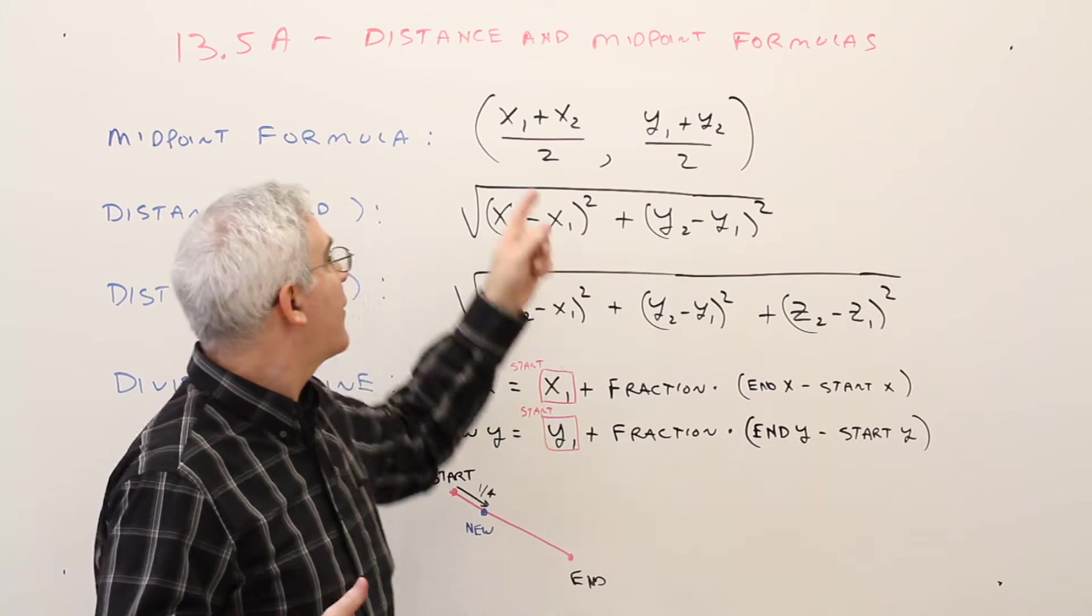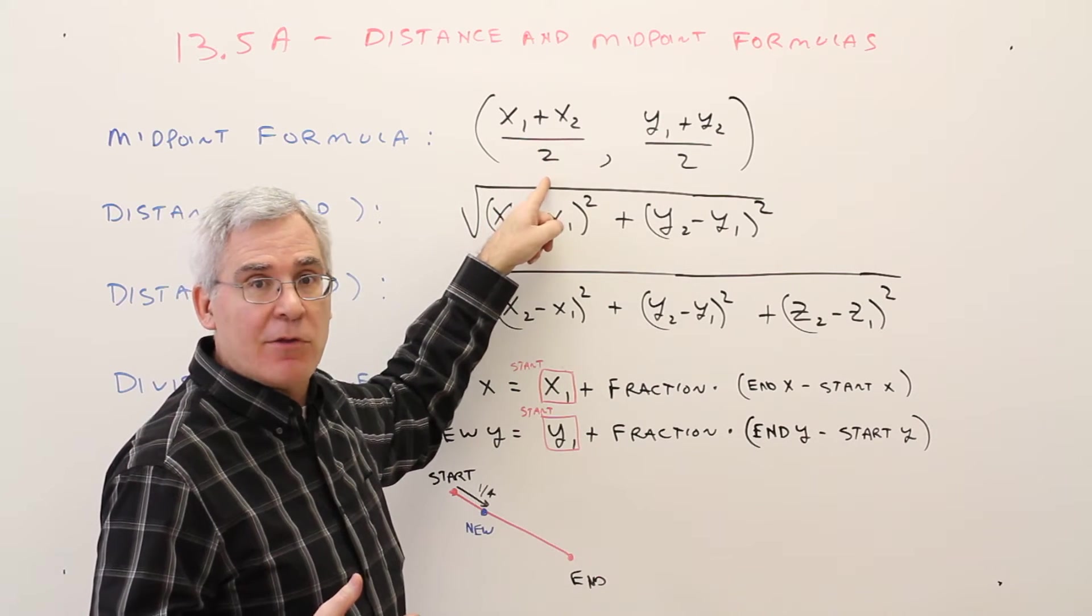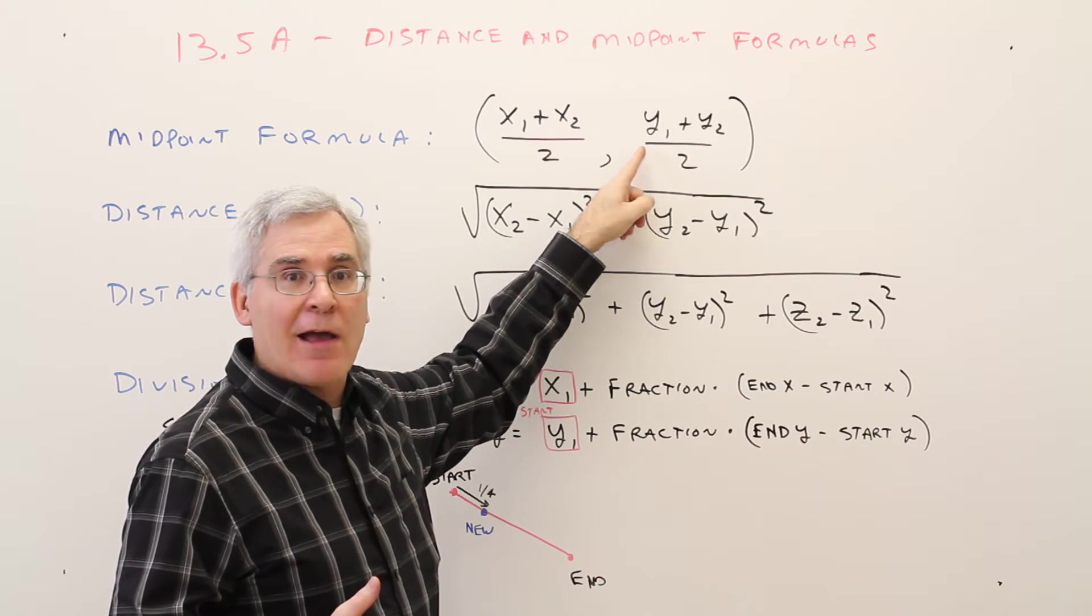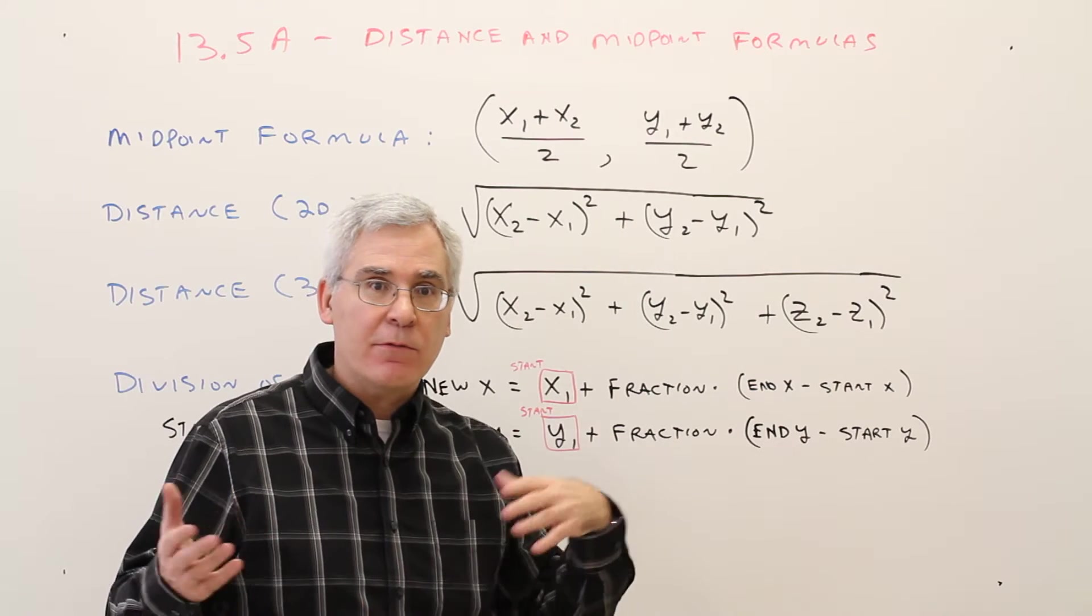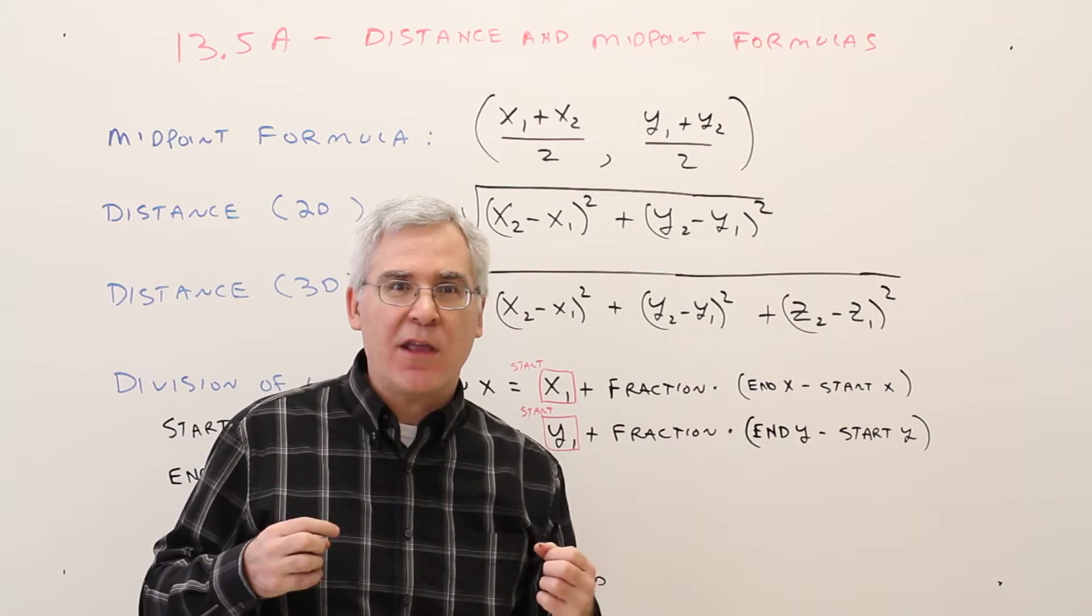And to find the average of the x, you just add and divide by 2. To find the average of the y, you just add and divide by 2. So I always try to think of quick, easy memory devices.